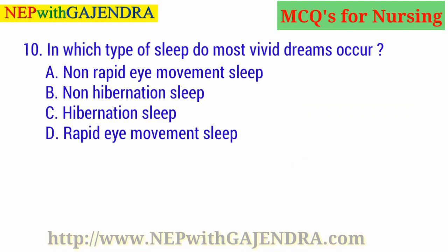In which type of sleep do most vivid dreams occur? A. Non-rapid eye movement sleep. B. Non-hibernation sleep. C. Hibernation sleep. D. Rapid eye movement sleep. The right answer is D: Rapid eye movement sleep.